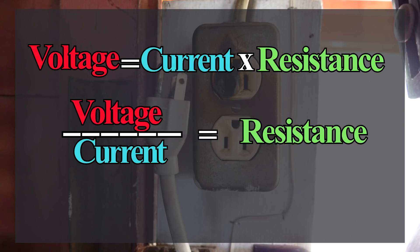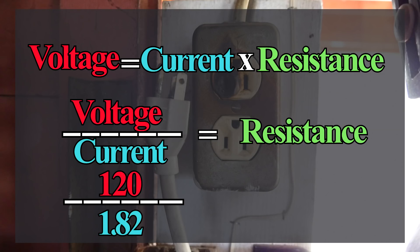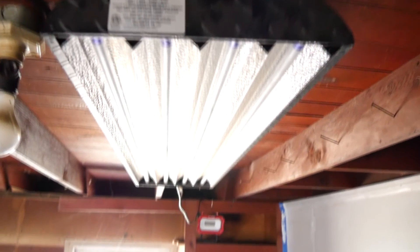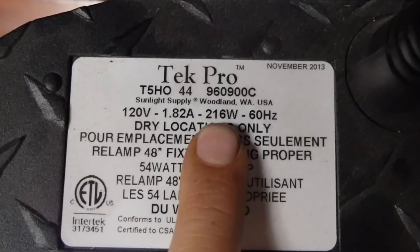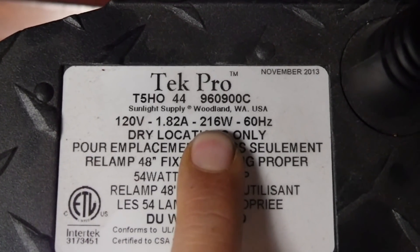We use Ohm's Law but switch things around so that resistance is on one side, since we already have two of the numbers. So we have 120 divided by 1.82 amps, which gives us 65.93 ohms of resistance. However, when you're working with household appliances or fixtures, you're usually not given the amps — you're actually given the wattage of that device. Back to our light fixture label, you can see that we have the wattage, which is 216.